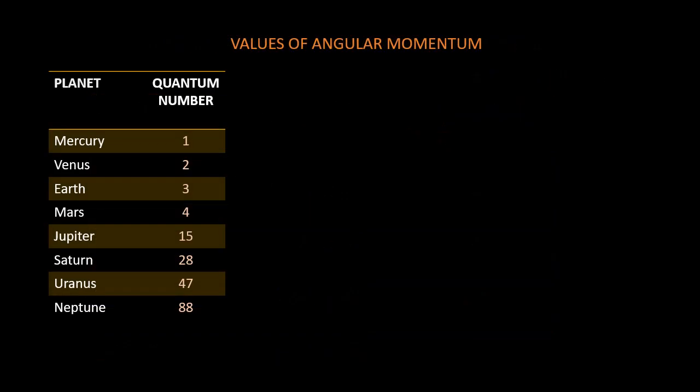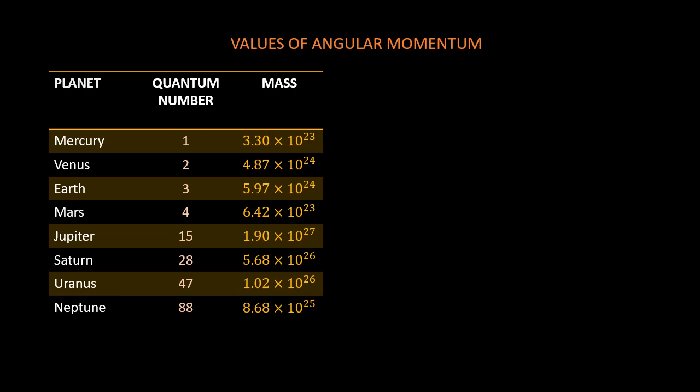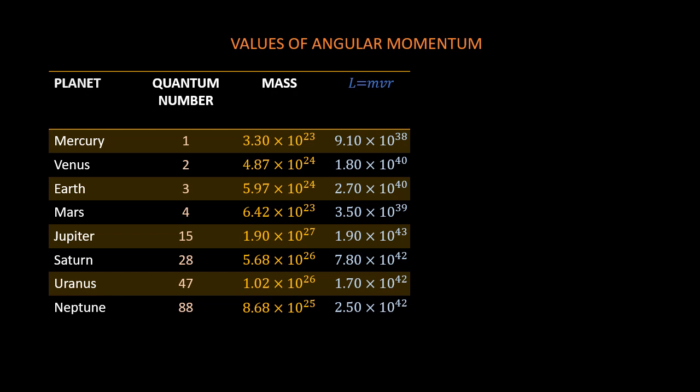Now, let us calculate the values of the momenta of the planets using the standard formula L equal to mvr, and compare them with those got in using the derived quantization formulas. The masses of the respective planets are given as follows. Using these masses and the standard values for velocity and radius for each of the planets, we have the following standard momenta. These are the values you see in textbooks or on the internet.